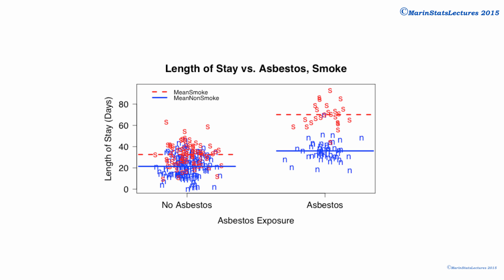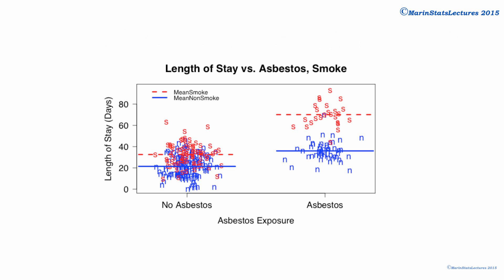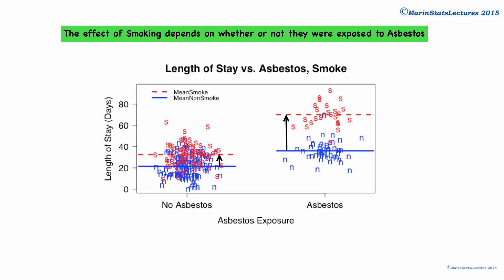In this plot, we can see that the effect of asbestos exposure and the effect of smoking interact. That is, the effect of asbestos exposure on the length of stay is dependent on smoking, and vice versa. Let's talk about why I'm saying that this plot displays the concept of interaction. Looking at this plot, we can see that the effect of smoking on the mean length of stay is different for those who are not exposed to asbestos and for those who are exposed to asbestos. In other words, the effect of smoking depends on whether or not they've been exposed to asbestos.